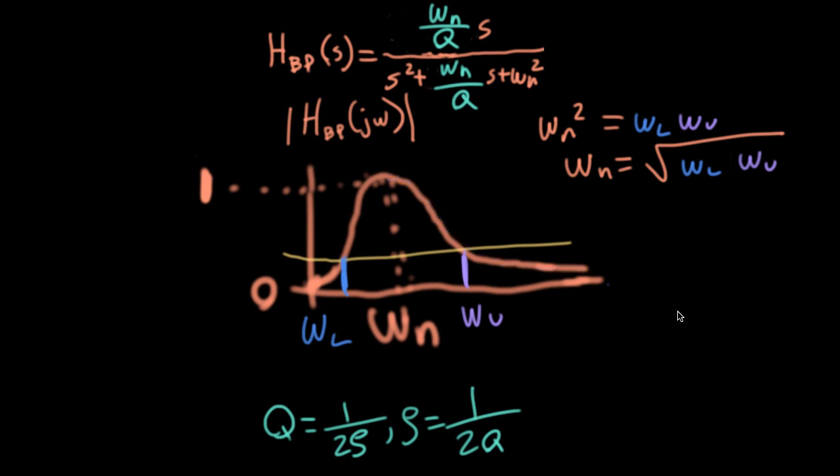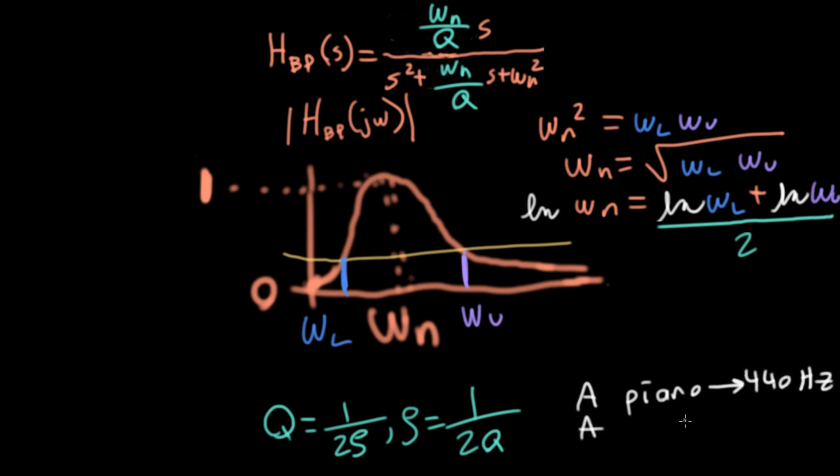So if I were to take the logarithm of both sides of this equation, I could write that log of the natural frequency is equal to log of the lower frequency plus log of this upper frequency. And what's fascinating about that is that humans perceive frequency on a logarithmic scale. For instance, if you were to play the A above middle C on a piano, that's 440 hertz. If you want the A an octave above it, then you would need to have 880 hertz, but the A an octave below it, that's 220 hertz. So humans are going to perceive each of these octaves as being an equivalent amount of frequency the way we perceive it.